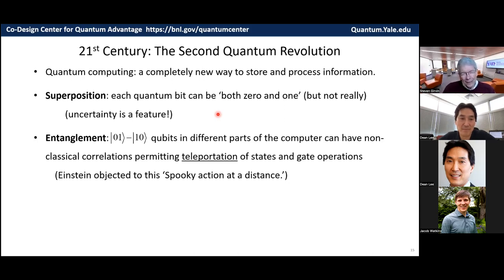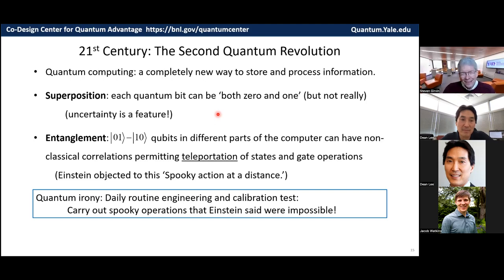And this gives you the ability to do very strange and interesting things with information processing. And one of the big ironies to continue talking about Einstein is that every morning when experimentalists at Yale turn on their experimental quantum computers, they run a routine engineering and calibration test, which is to do these spooky operations that Einstein said were impossible. And if they get them to work, then they know the quantum computer is working and it's not a classical computer. So I think if Einstein were alive today, you know, he would catch on pretty quickly and be very happy to see this.